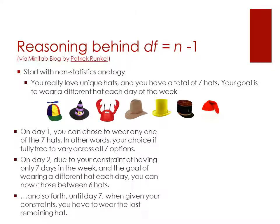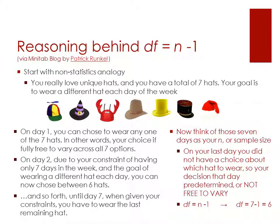So when we're looking at this, we see that on the last day, you did not have a choice in what hat to wear. Given the constraints and your goal, that hat was already predetermined for you. So if we think of those seven days as your n, or your sample size, on your last day, you did not have a choice about which hat to wear. It was predetermined, or in statistical terms, it was not free to vary.